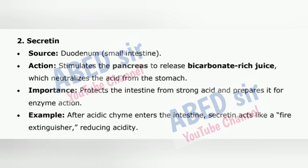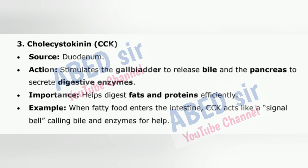2. Secretin — Source: duodenum (small intestine). Action: stimulates the pancreas to release bicarbonate-rich juice, which neutralizes the acid from the stomach. Importance: protects the intestine from strong acid and prepares it for enzyme action. Example: after acidic chyme enters the intestine, secretin acts like a fire extinguisher, reducing acidity. 3. Cholecystokinin (CCK) — Source: duodenum. Action: stimulates the gallbladder to release bile and the pancreas to secrete digestive enzymes. Importance: helps digest fats and proteins efficiently. Example: when fatty food enters the intestine, CCK acts like a signal bell calling bile and enzymes for help.